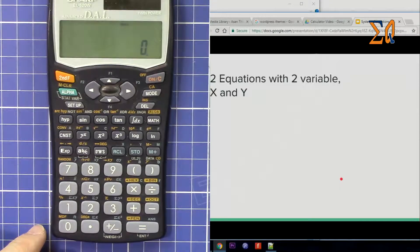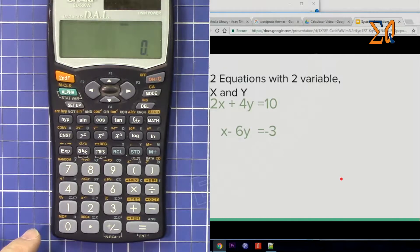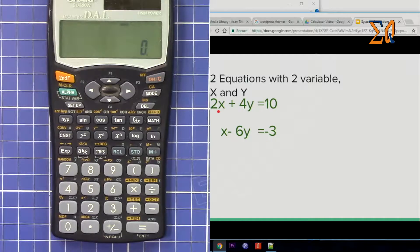Let's say you have two equations with two variables, X and Y. We want to find which values of X and Y make these two equations true. The equations are: 2x + 4y = 10 and x - 6y = -3.